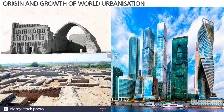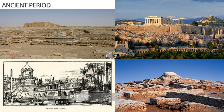Origin and growth of world urbanization — when did the process of urbanization begin in world history? It started in the prehistoric period itself, during the ancient period. When human beings began to settle in a particular place to practice agriculture, from that day the concept of urbanization began to grow. The process of urbanization in the world can be studied as ancient period, medieval period, and modern period. The urban centers started developing during the prehistoric period, that is before 10,000 years. Prehistoric period means there is no written evidence, but we have the tools and equipment used by our ancestors.